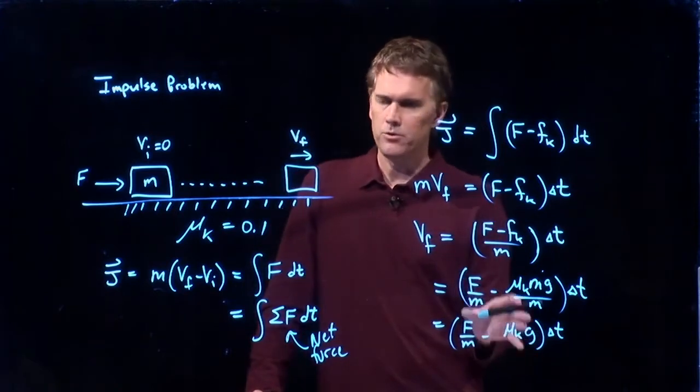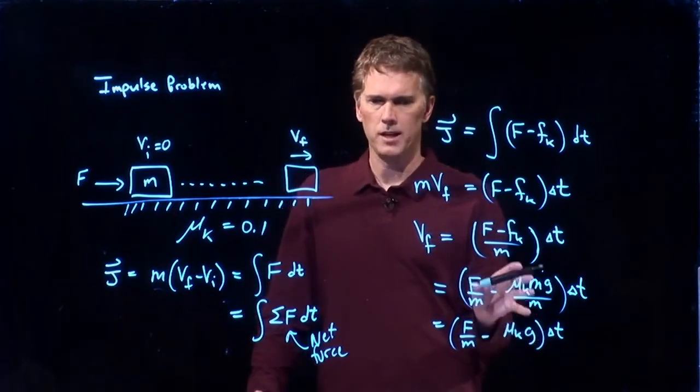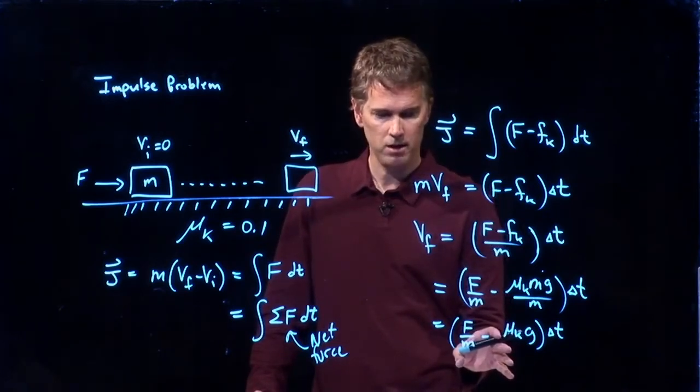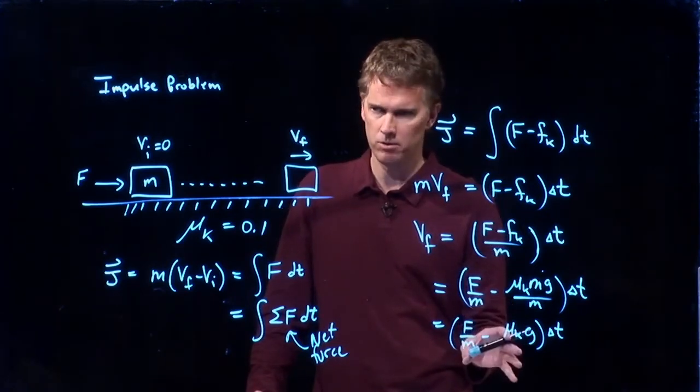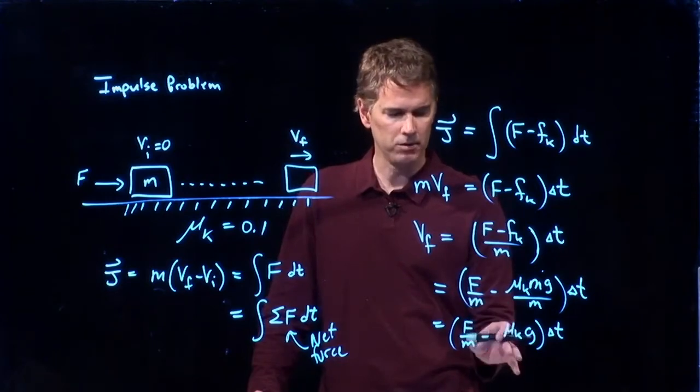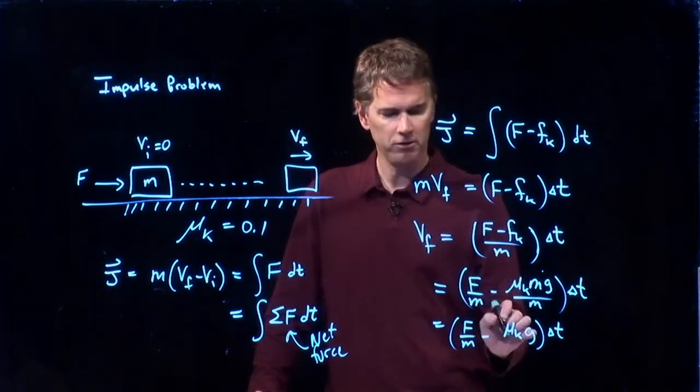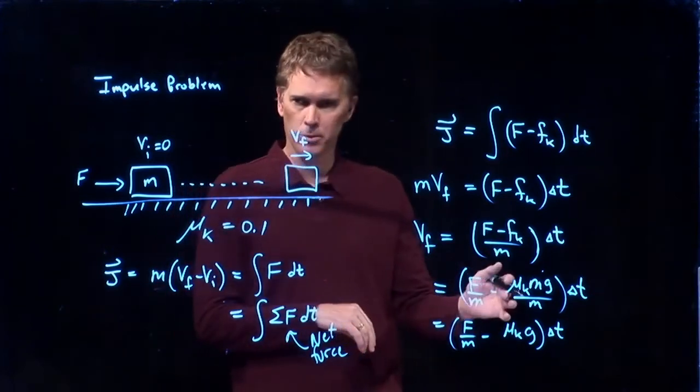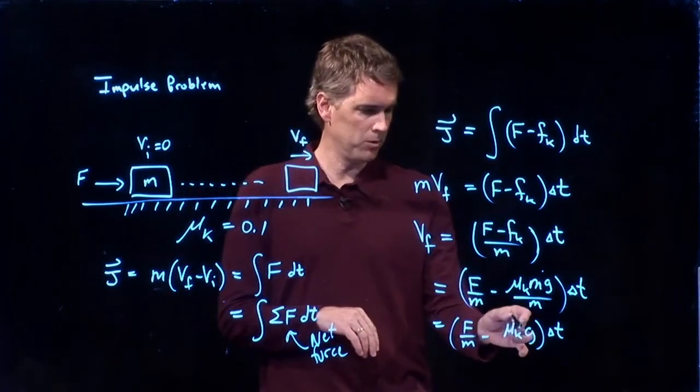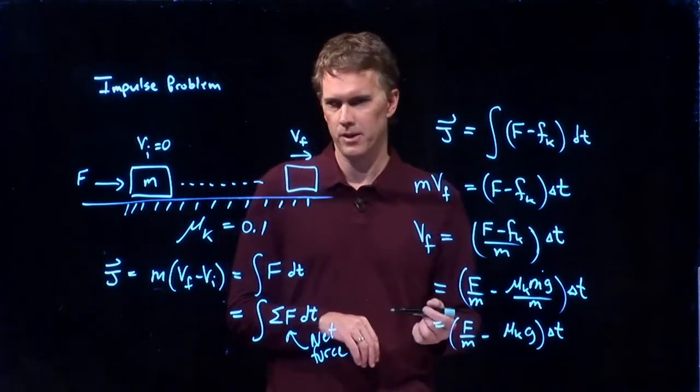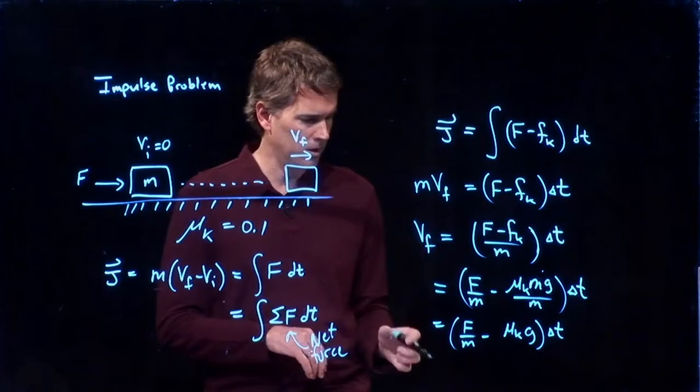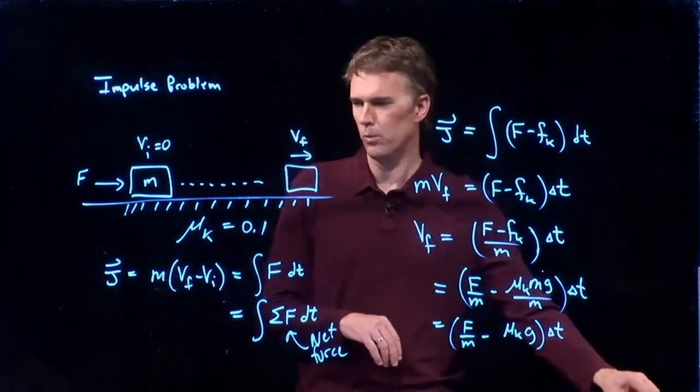Whenever you get an answer like this, you should always double check that it gives you the right units and that it gives you the right limits. So if mu k goes to 0, this is for frictionless. We should be back to where we were originally, which is good. This term goes away. We get f over m times delta t, which is what we had before. And now you can plug in some numbers and let's see how it works out.